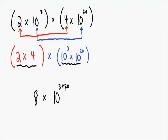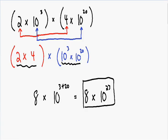And we can simplify this even further. We have 8 times 10, and in our exponent we have 3 plus 20. 3 plus 20 is equal to 23. So this is our final answer: 8 times 10 to the 23rd.